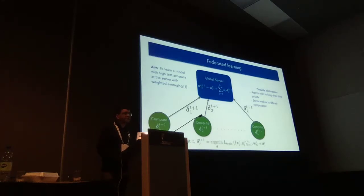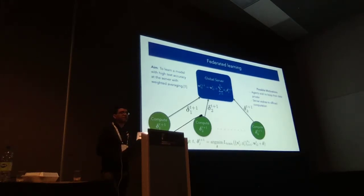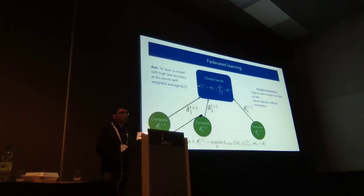The alpha j's are some weighting factors that the global server uses. Typically you can think of them as one over the number of agents, in order to ensure that no one agent's update dominates — you just average everybody's updates. In all of the settings I'm going to consider, it's just going to be one over the number of agents.